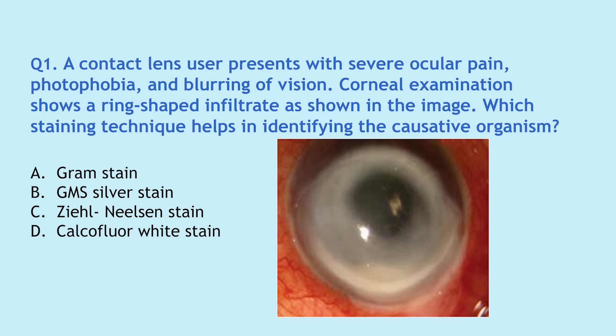The first question was: a contact lens user presents with severe ocular pain, photophobia and blurring of vision. The corneal examination shows a ring-shaped infiltrate, as you can see in the image, which is quite pronounced inferiorly and relatively less pronounced superiorly. Which staining technique helps in identifying the causative organism? The options given were Gram stain, GMS silver stain, Ziehl-Neelsen stain, or the calcofluor white stain.